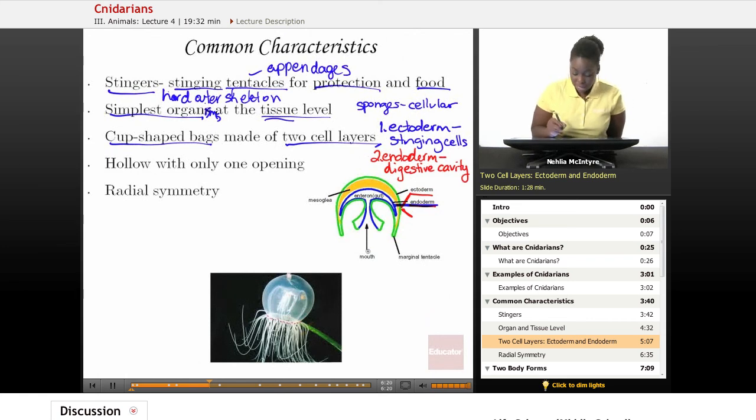Now, as you can tell from this diagram, the Cnidarian has one opening. It's a hollow with only one opening. And that opening would be considered the mouth, but also waste materials can come out of that same opening.